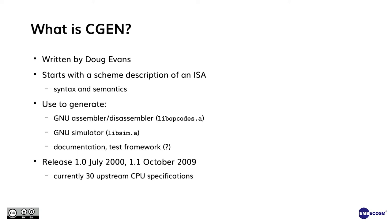CGEN was developed by Doug Evans initially on an MSC project. It starts with a semi-formal description of the syntax and semantics of an instruction set architecture written in Scheme. From the Scheme description, CGEN generates two libraries — LibOpCodes and LibSim — used at the heart of the assembler, disassembler, and the simulator. CGEN also has hooks to generate documentation and a test framework.